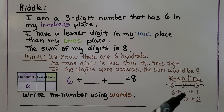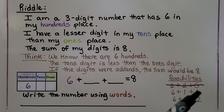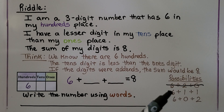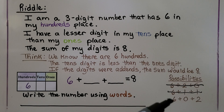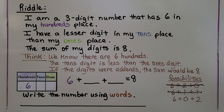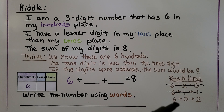The second option has equal tens and ones digits, so that's not it either. It must be six plus zero plus two — meaning six in the hundreds, zero in the tens, and two in the ones. That way, if we added up the digits, they would equal eight.